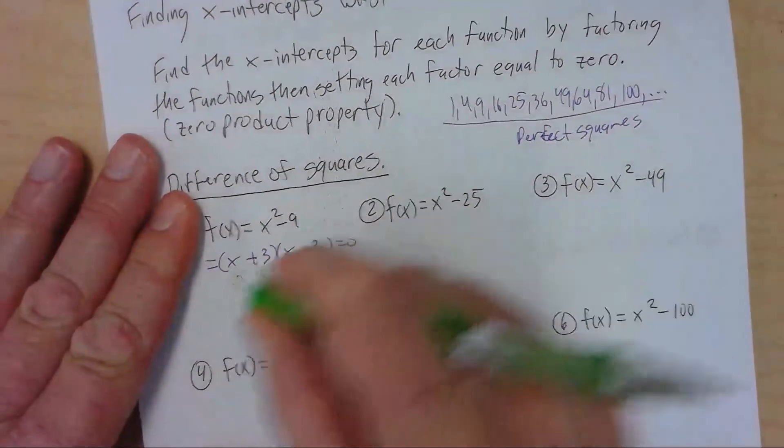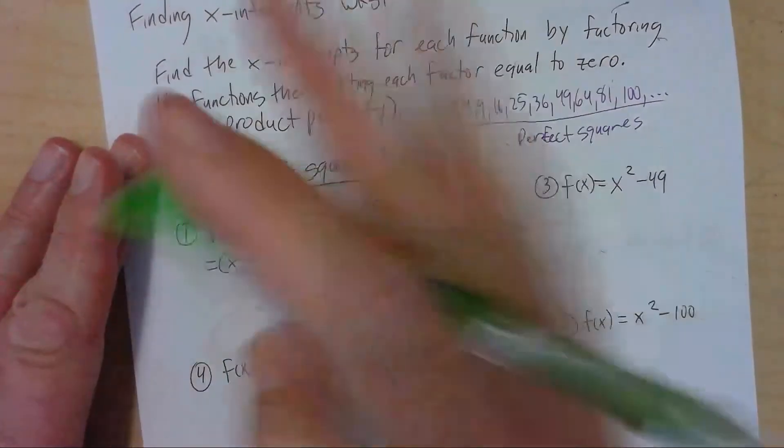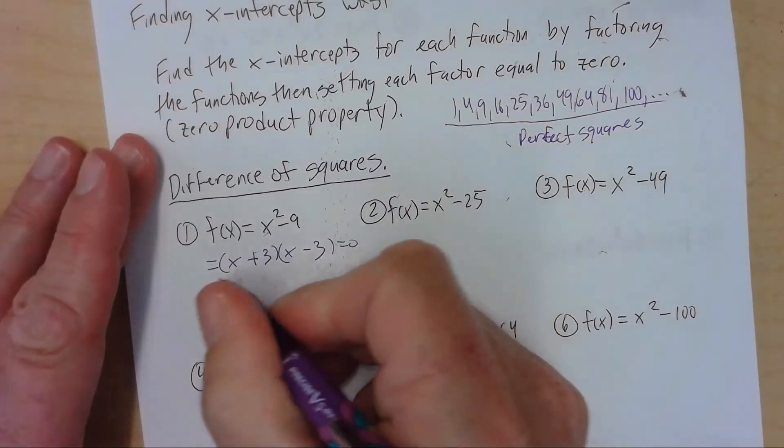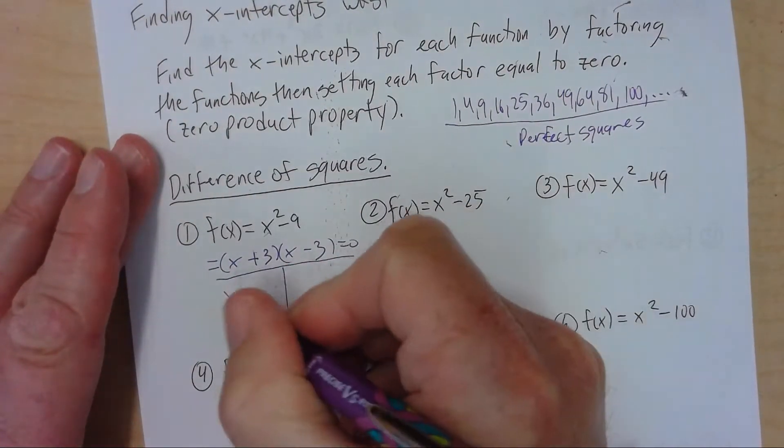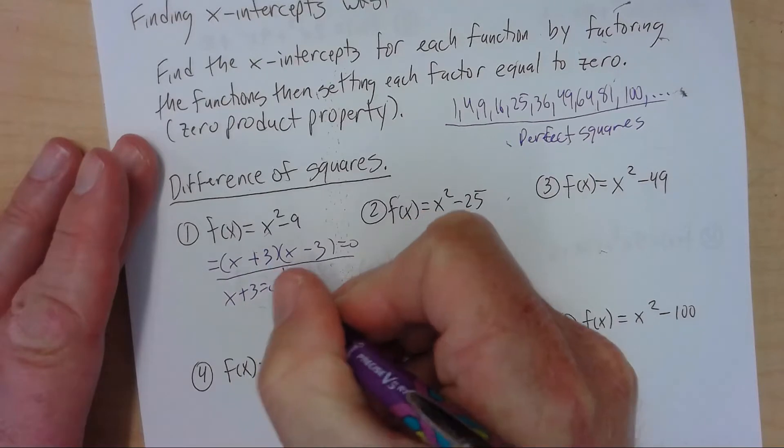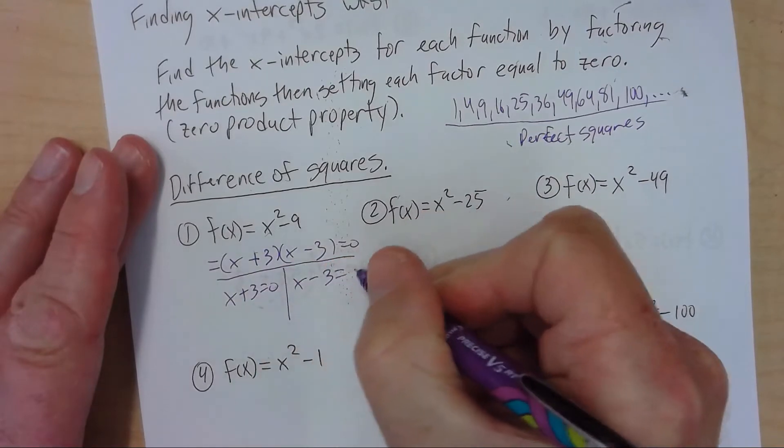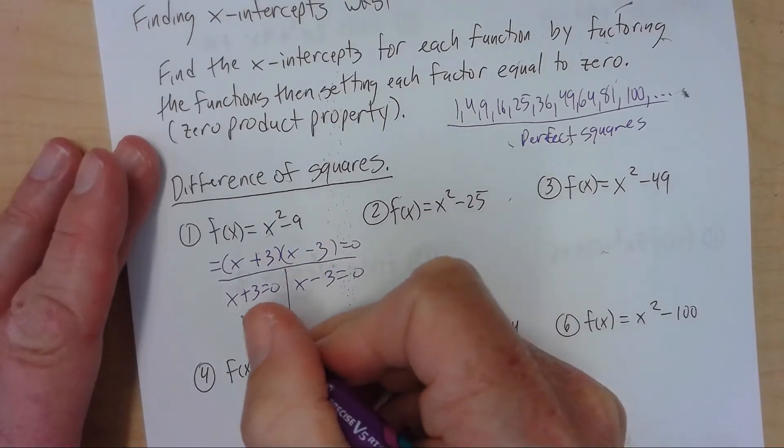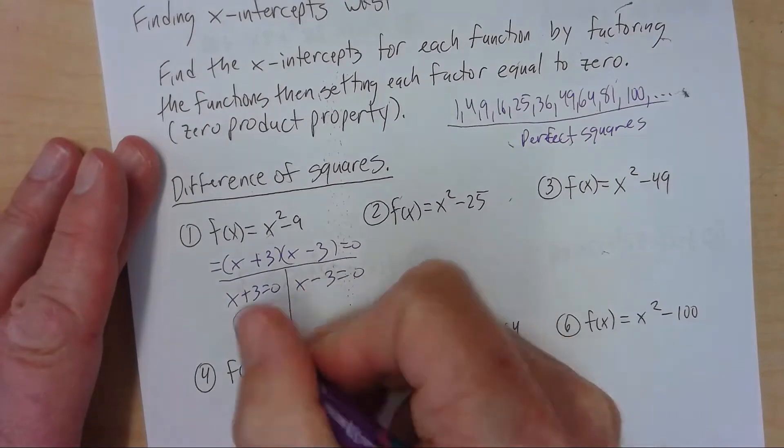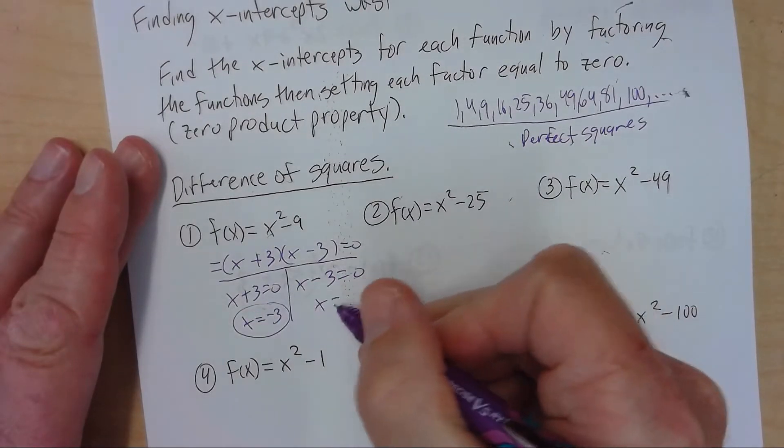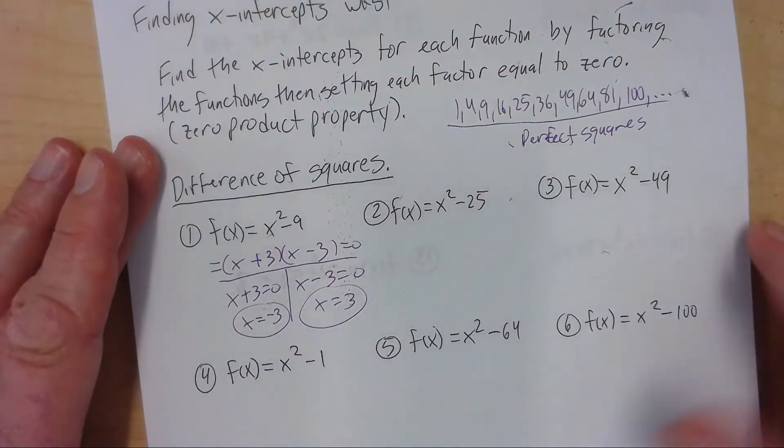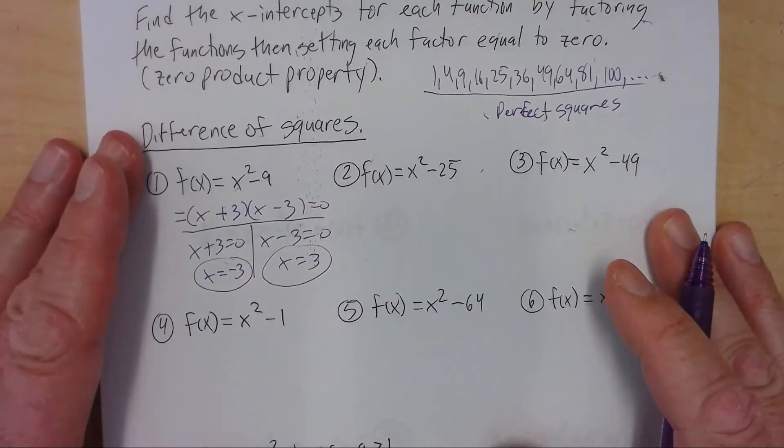So then once I get this part, bring it back in the pen, and I make a T. I go zero product property. So then I subtract the 3 over, I get x is negative 3. So add the 3 over, x is 3. So this has x-intercepts of 3 and negative 3.